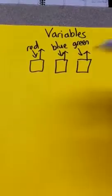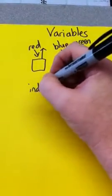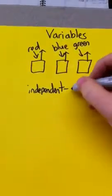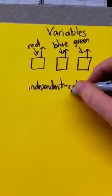Okay, so what you're changing is going to be the independent variable. So the independent variable for this one is going to be the color of light, because that's what you're changing.